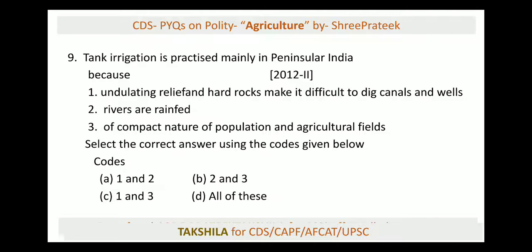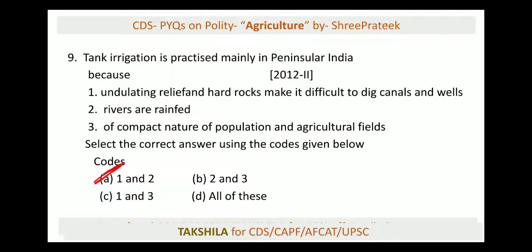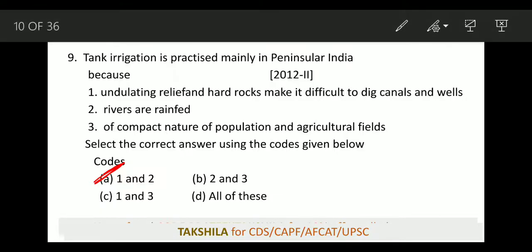Next: tank irrigation is practiced mainly in peninsular India because of — (1) undulating relief and hard rocks making it difficult to dig channels and wells — that is correct; (2) rivers are rain-fed — also correct; (3) compact nature of population and agriculture fields. The answer is options 1 and 2. In South India, you cannot get groundwater because the rock structure is too hard, so you have to build tanks (ponds) to store rainwater for use.